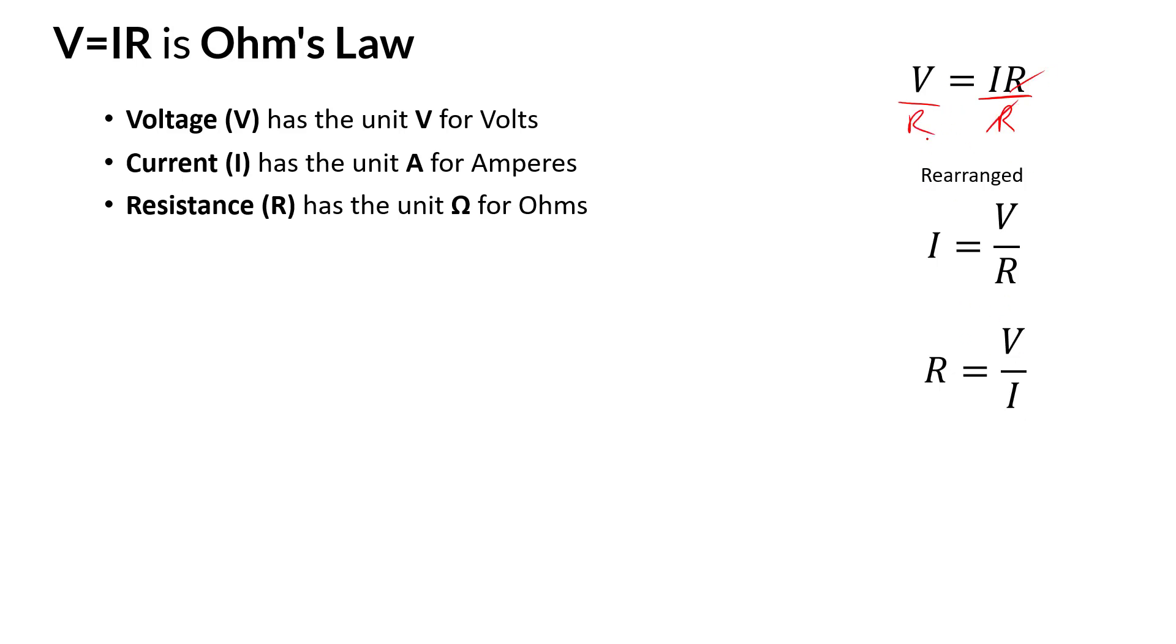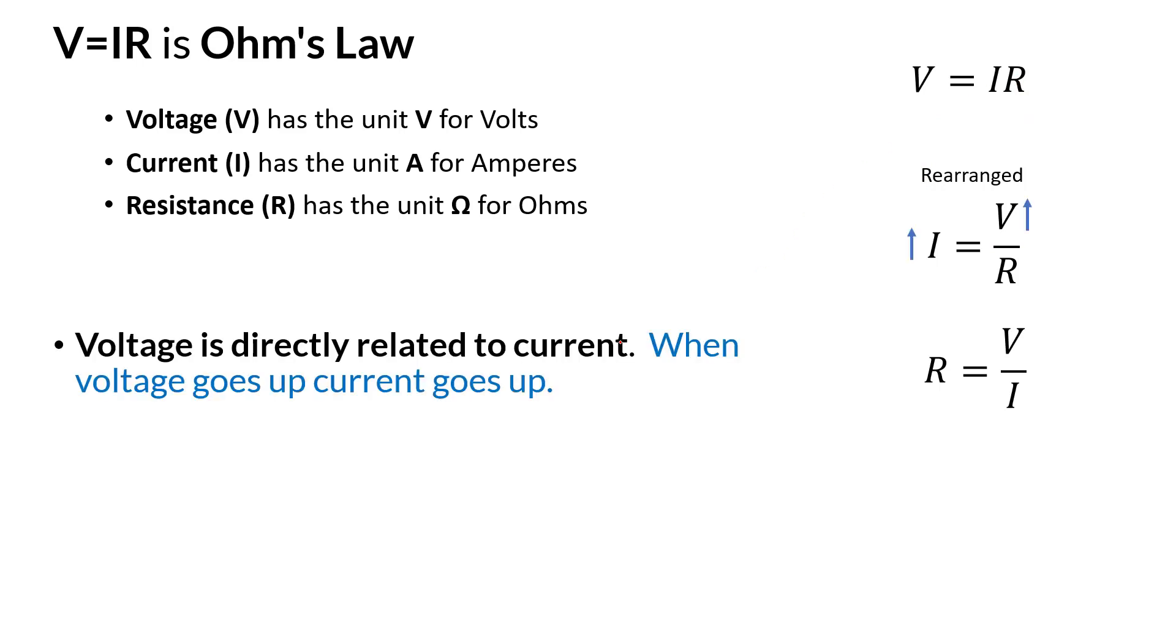Voltage is directly related to current. So if I have a higher voltage, I'm also going to get a higher current. For example, if this is 1 to 2, this also would become 2.